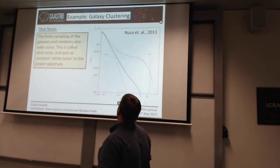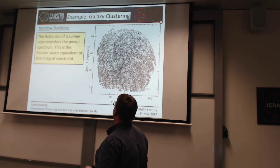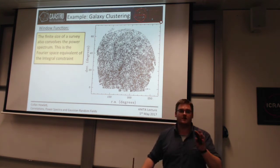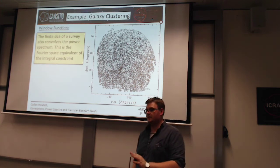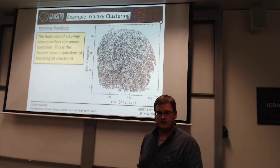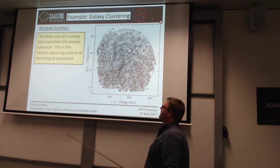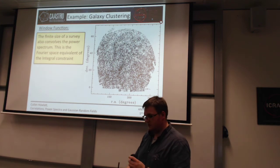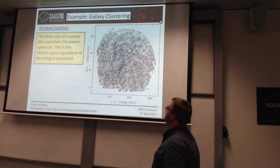So that is an overview of the power spectrum and some of the things that happen when you do Fourier transforms. All of these — the Nyquist frequency, aliasing, shot noise, gridding effects — are not unique to galaxy clustering; they happen when you take the Fourier transform of any density field.